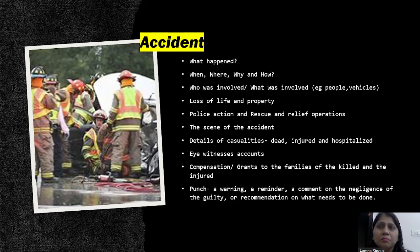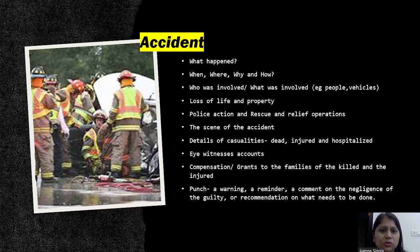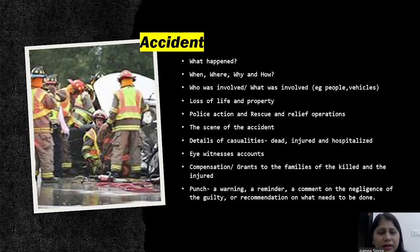You can briefly depict the scene of the accident, write about how many were injured or hospitalized, and give an account of eyewitnesses. Mention what compensation or grants were given to the families of the killed or injured. At the end, you can write about warnings, reminders, comments on the negligence of the guilty, and suggestions on what actions could be taken to avoid such accidents.